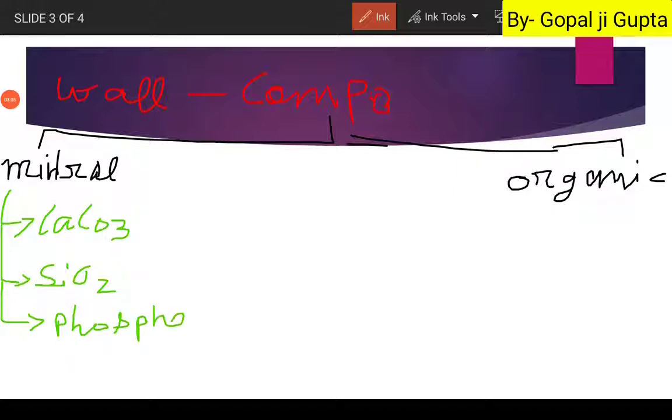And the third one is your phosphatic composition. And the fourth and last one is your chitinocalcareous, whatever you pronounce it.